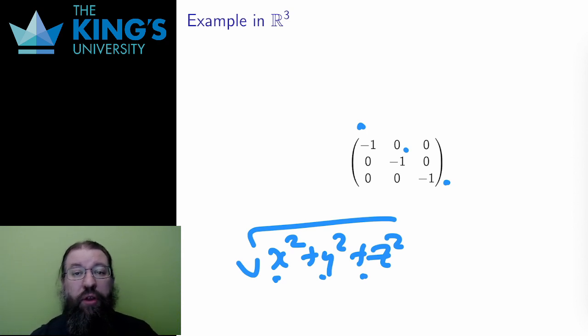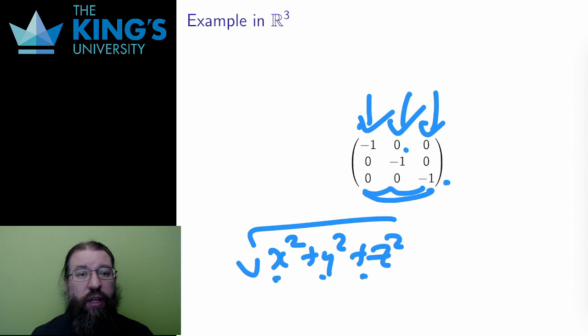I can also check all the other properties if I wish. The columns are orthogonal to each other. Take any two, and the dot product will be 0, and they are all of length 1.